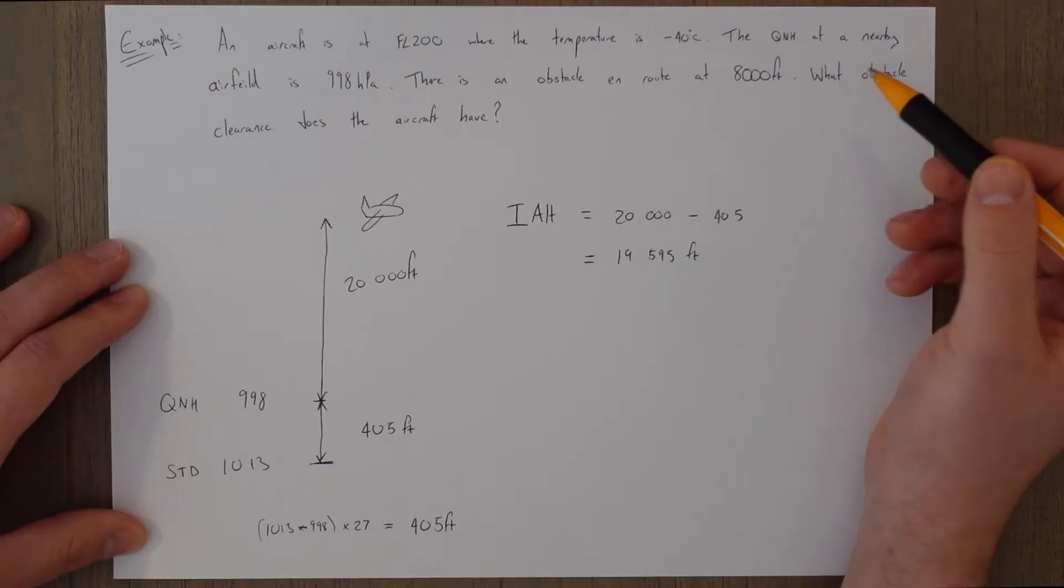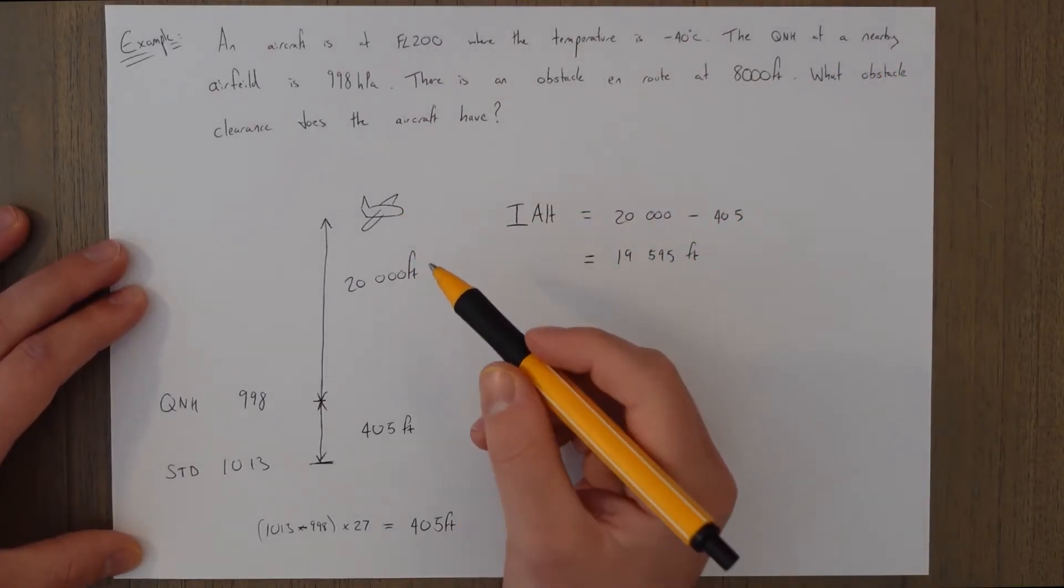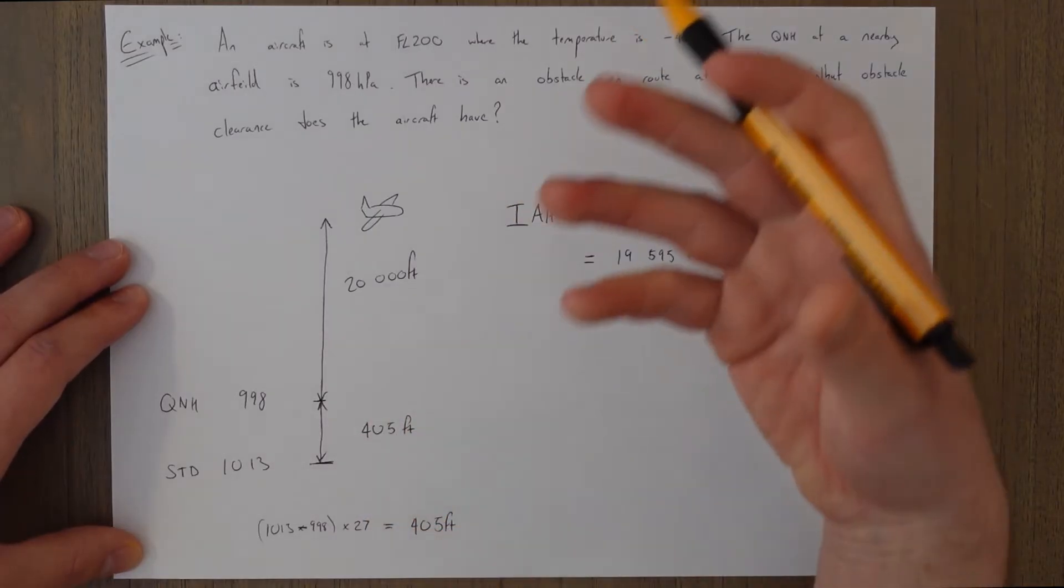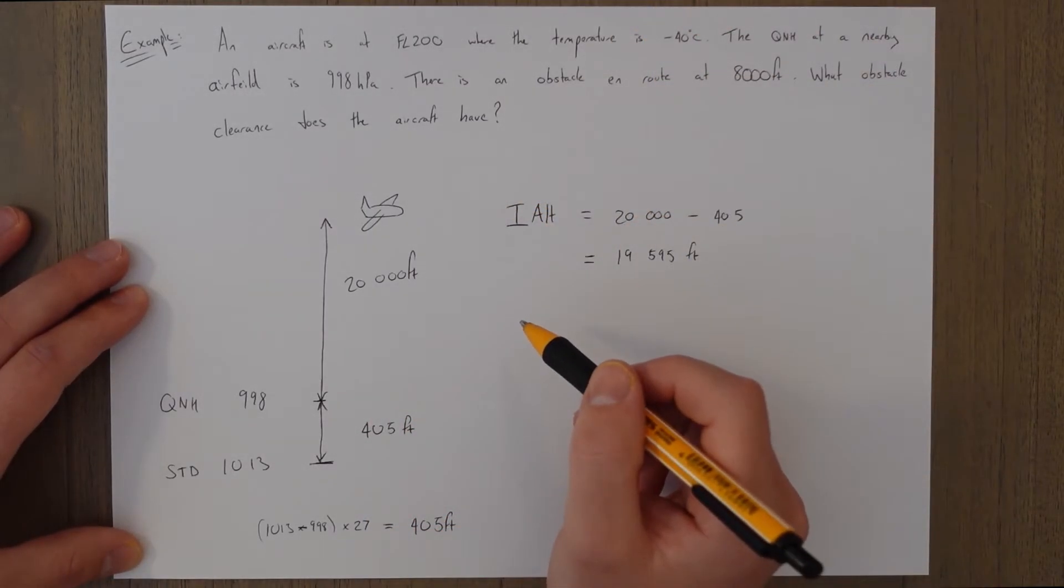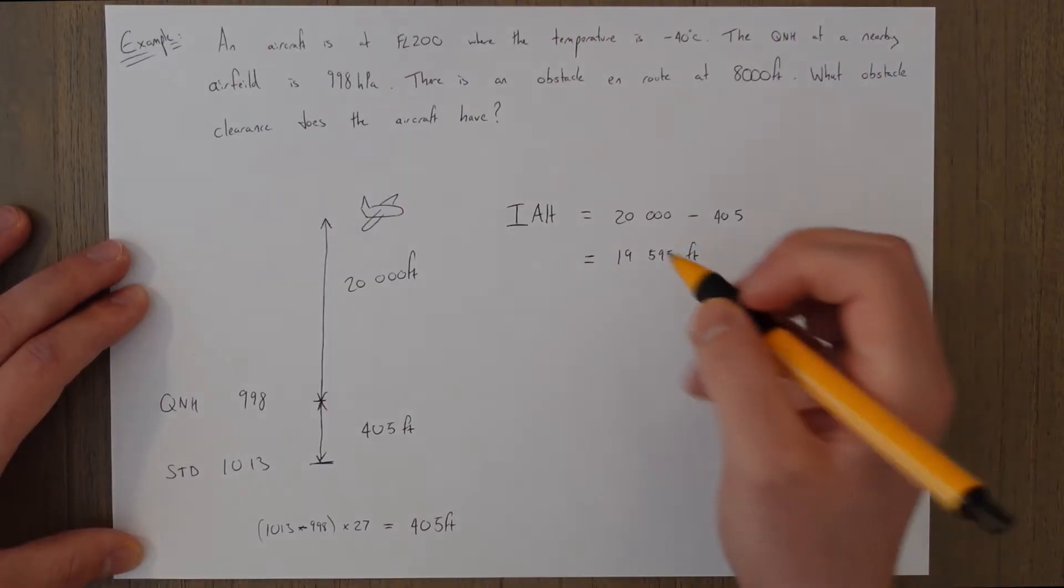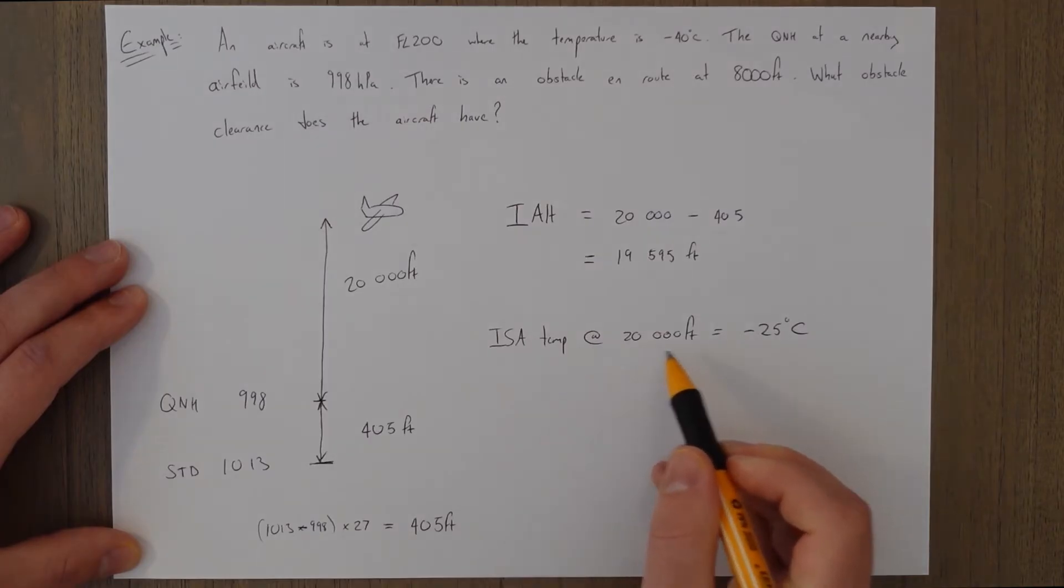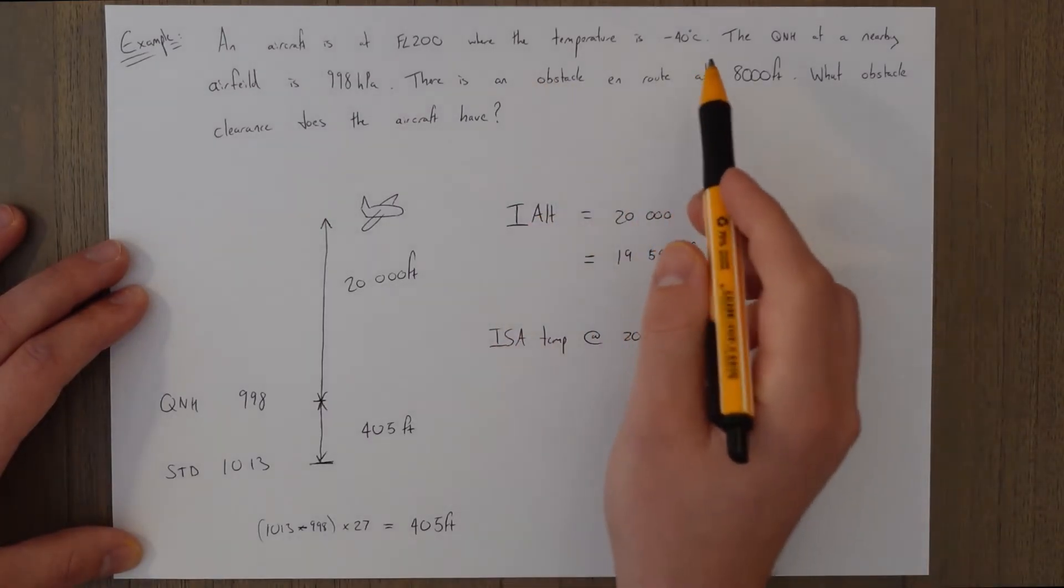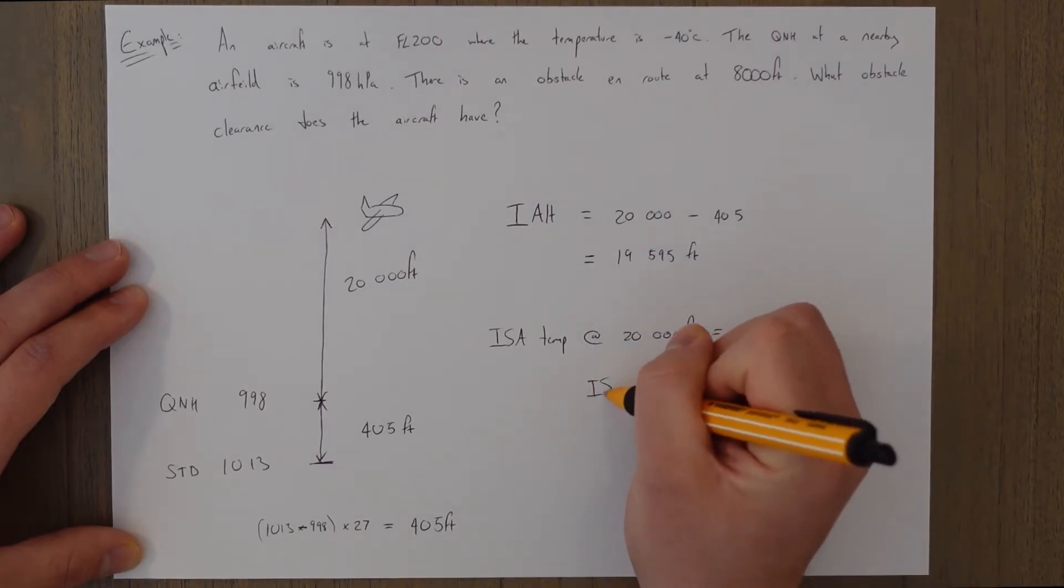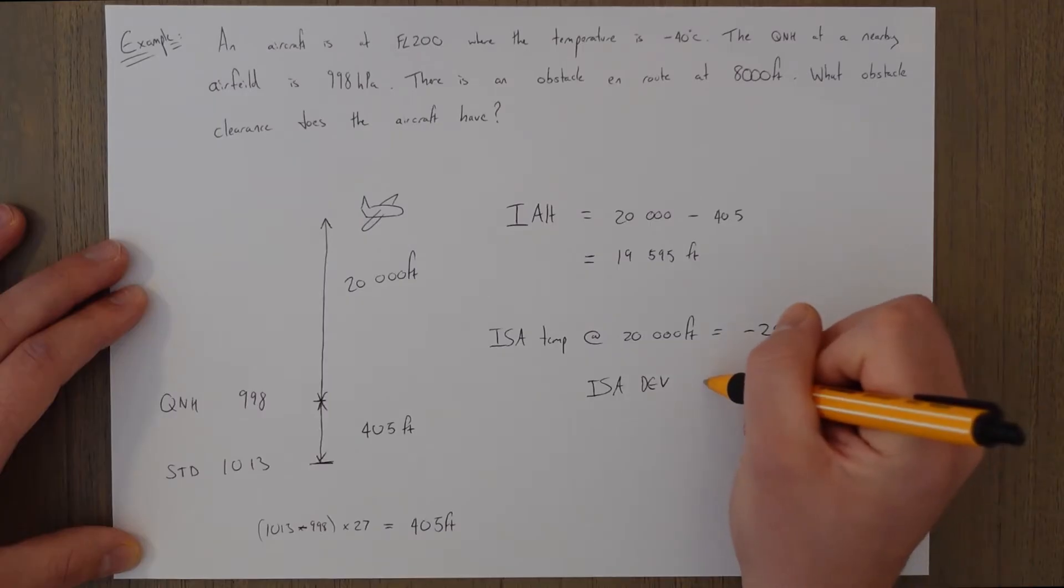So normally at 20,000 feet the temperature would be 15 degrees and then 2 degrees per thousand feet. So 15 minus 40 is going to be minus 25, so ISA at 20,000 feet. So ISA temperature at 20,000 feet is minus 25 degrees celsius, and it today is minus 40, so the ISA deviation is 15 degrees colder, equals minus 15 degrees.